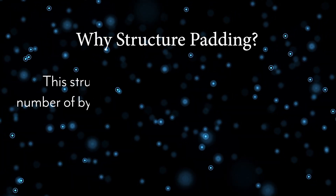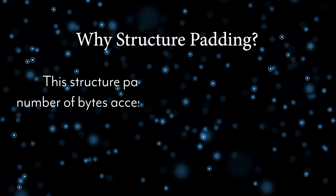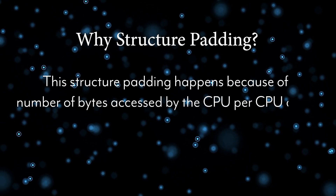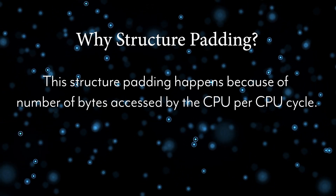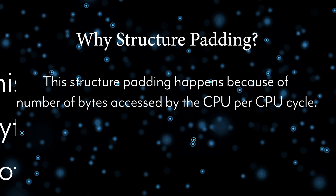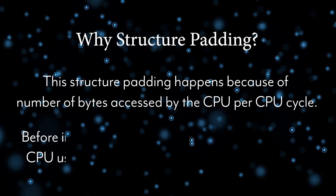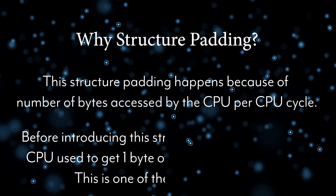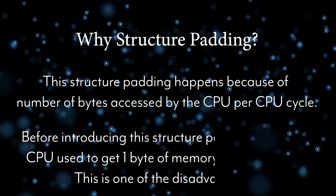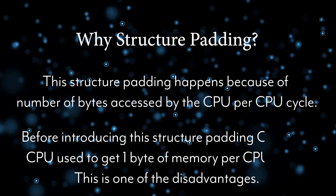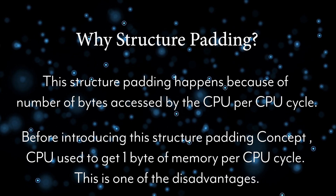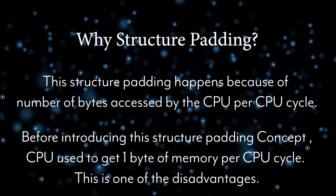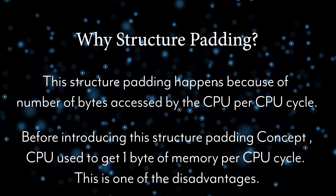The reason behind structure padding is the number of bytes accessed by the CPU per CPU cycle. Before introducing the structure padding concept, the CPU used to get one byte of memory per CPU cycle — this was one of the disadvantages.